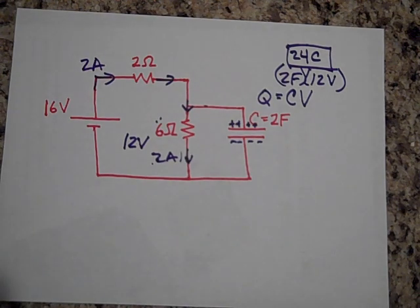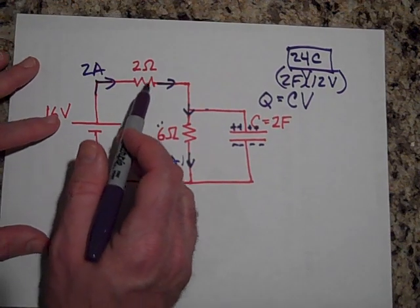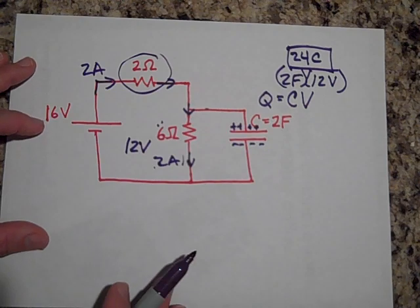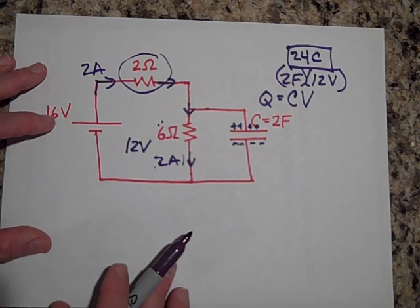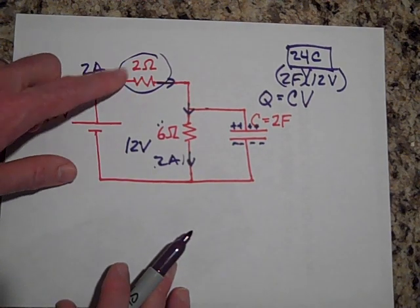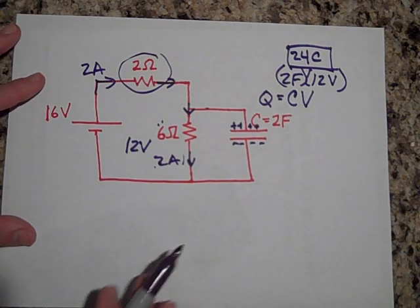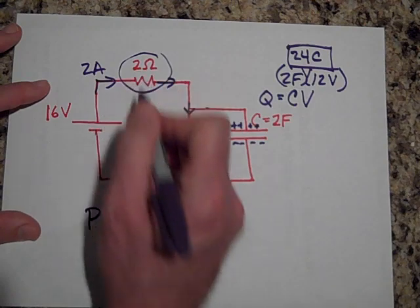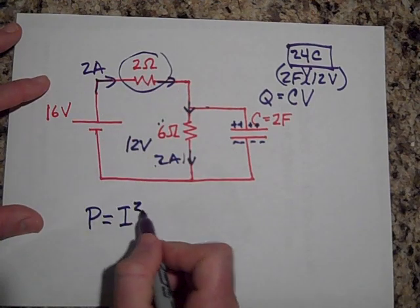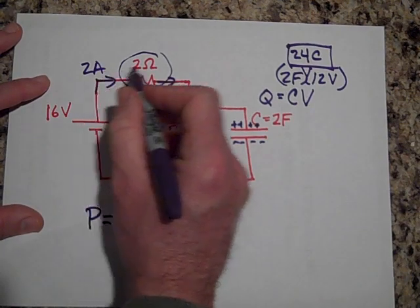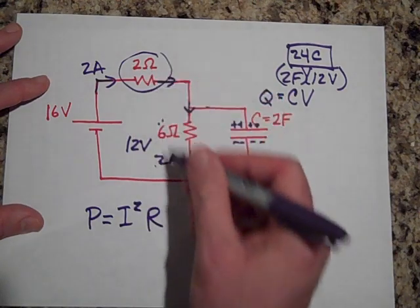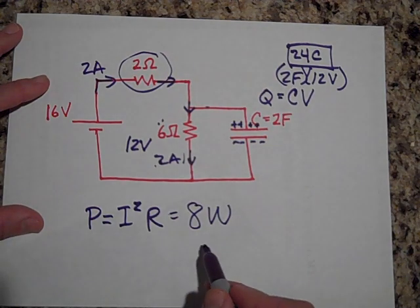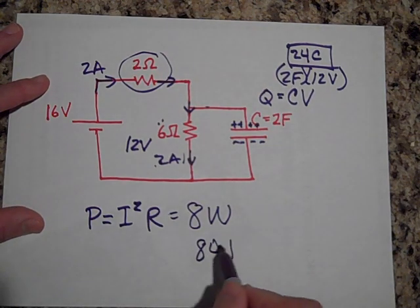How much thermal energy will be created in the 2-ohm resistor in 10 seconds? The power dissipated is I squared times R, so 2 squared times 2 equals 8 watts. Over 10 seconds that's 80 joules.